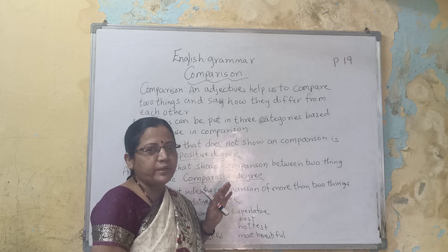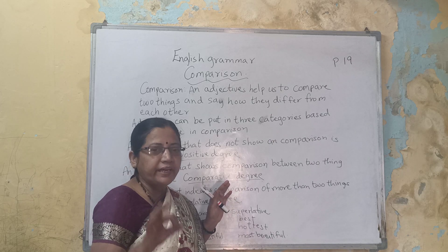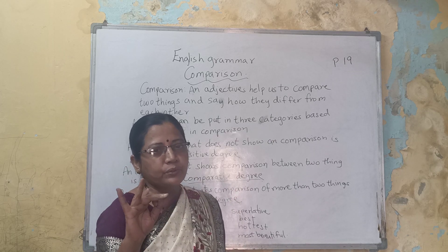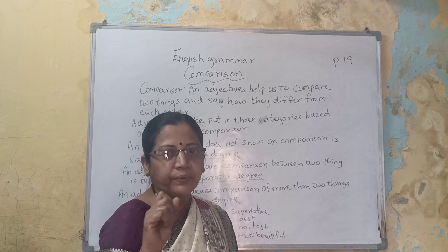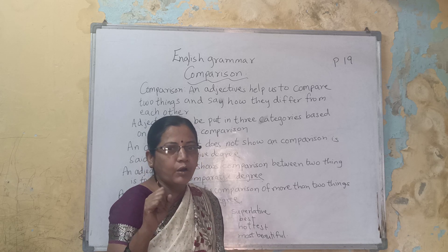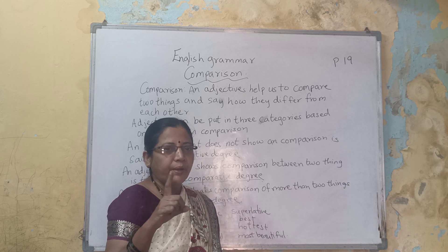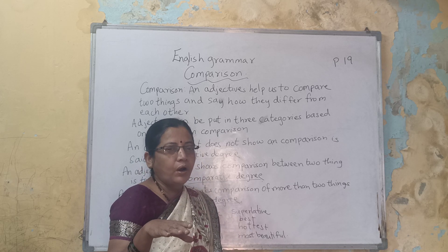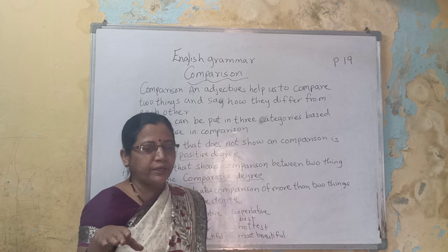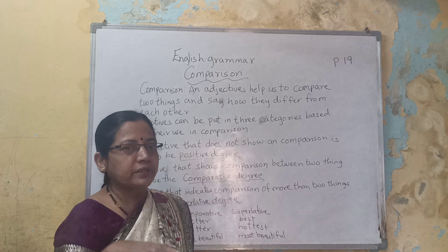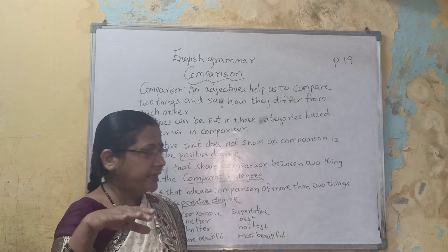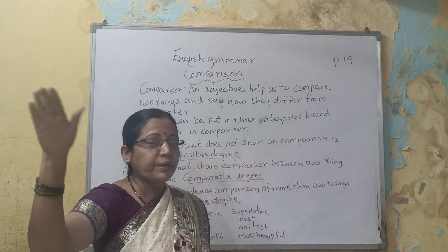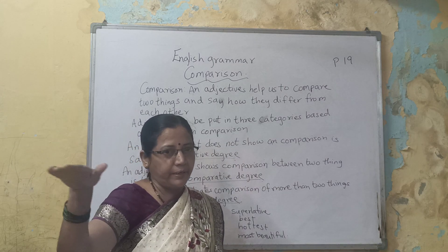Comparison has three degrees: Positive, Comparative, and Superlative. Positive is the normal form. Comparative is when something is slightly bigger or more than another.